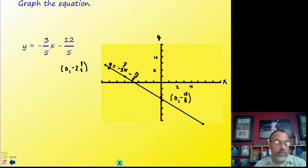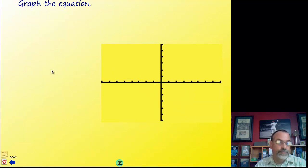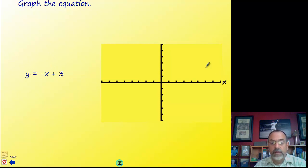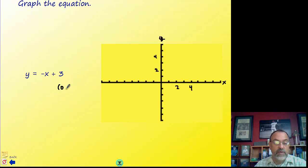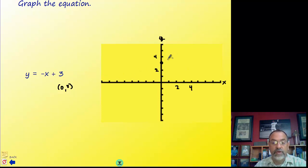One more example: y equals negative x plus 3. We label the axes first, and we notice the y-intercept is positive 3, so the line crosses the y-axis at 3, giving us the point (0, 3).